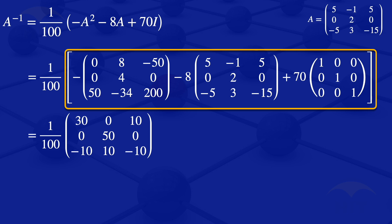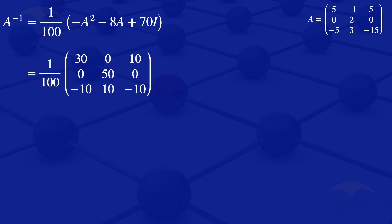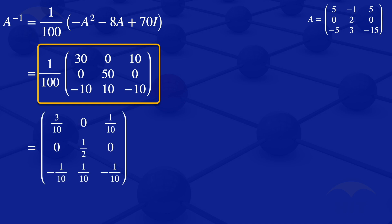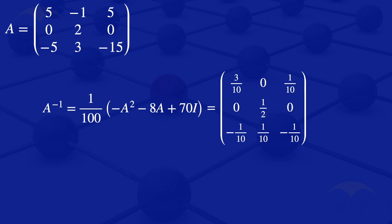We now multiply that matrix by the scalar 1 over 100, dividing all elements by 100. The result is the 3 by 3 matrix with elements 3 over 10, 0, 1 over 10, 0, 1 over 2, 0, minus 1 over 10, 1 over 10, minus 1 over 10. So the inverse of the given 3 by 3 matrix using the Cayley-Hamilton theorem is that matrix.